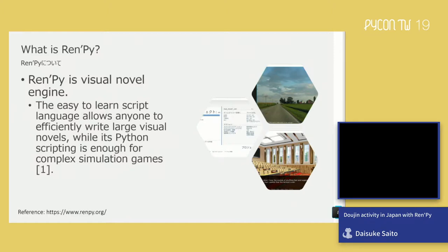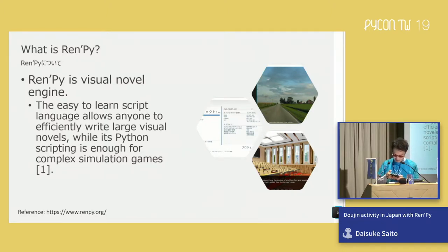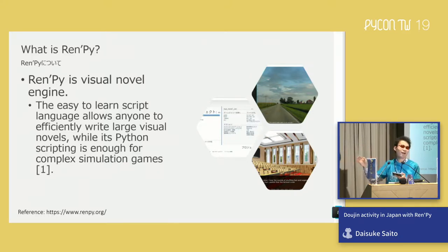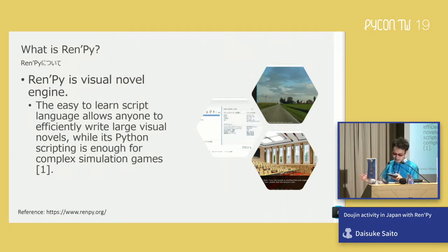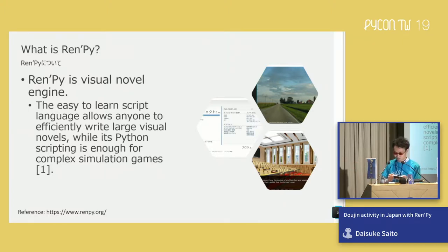Let me talk about RenPy. RenPy is a visual novel game engine. RenPy was released around 2004, so this year is its 15th anniversary. RenPy is an easy-to-run script language that allows anyone to effectively write visual novels, and Python scripting is supported for more complex simulations and simulation games.